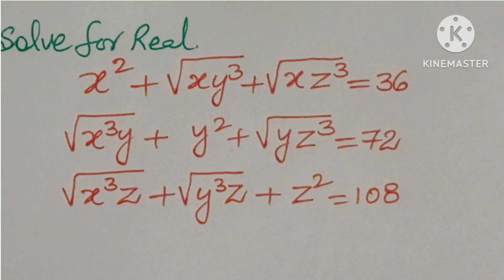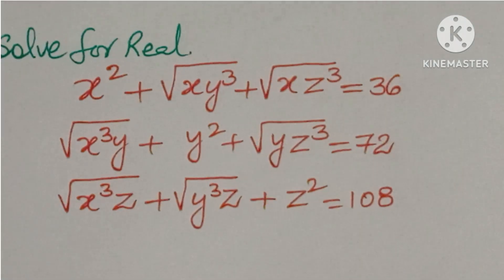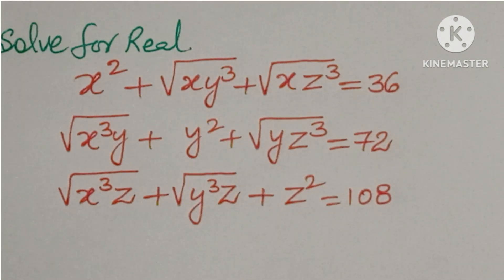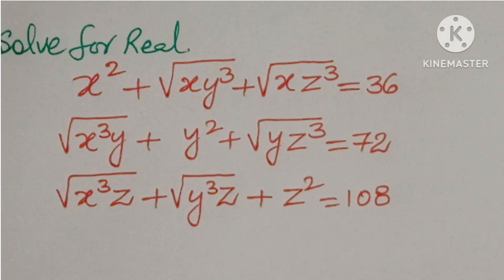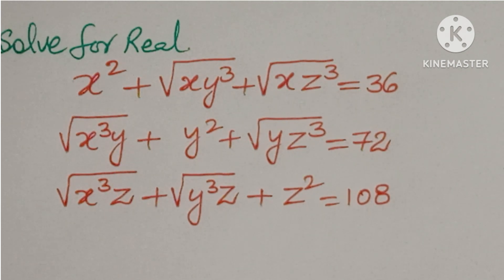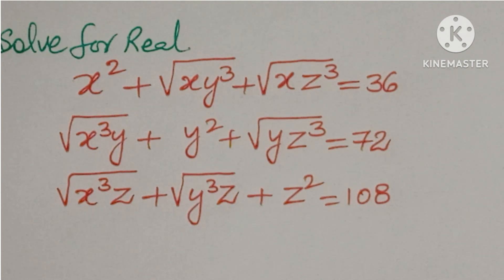Hello, welcome back to NCG Max. Today you are looking at an all-impaired problem. The question is: solve x for real values. x² + √(xy³) + √(xz³) = 36; √(x³y) + y² + √(yz³) = 72; √(x³z) + √(y³z) + z² = 108.